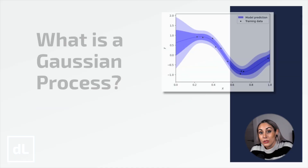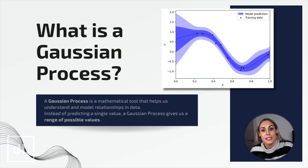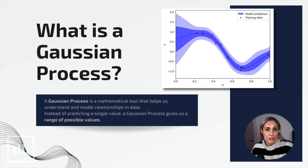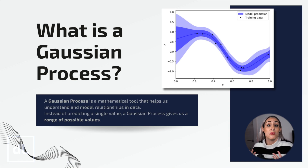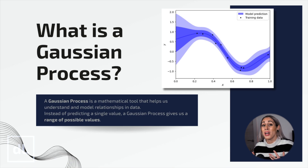There is something truly fascinating about Gaussian processes' versatility and all the applications where they are the perfect solution. A Gaussian process is a mathematical tool that helps us understand and model relationships in data. But instead of predicting a single value — like saying the temperature tomorrow is 25 degrees — a Gaussian process gives us a range of possible values, acknowledging that we're not entirely sure. There are two ways of looking at Gaussian processes: as a way of modeling correlation between points, and as distributions over functions.